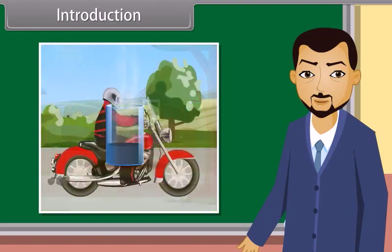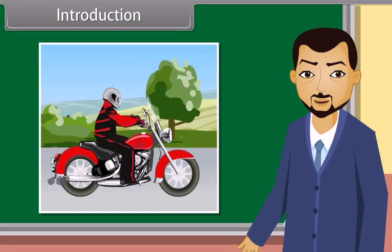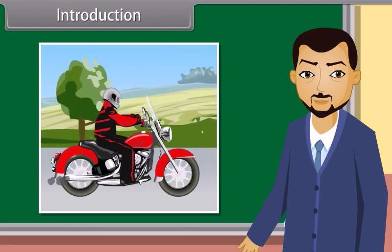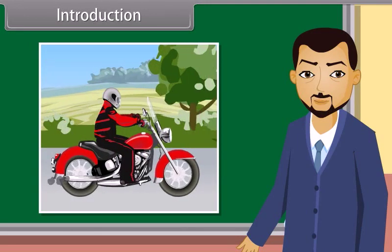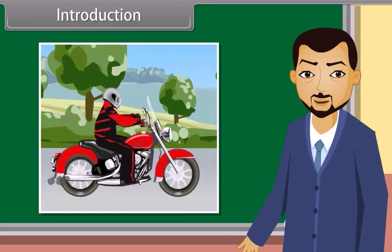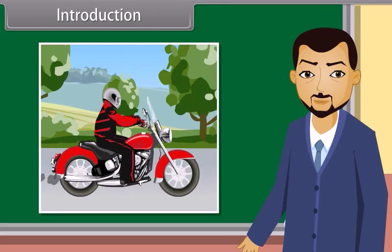However, if we use the same petrol in our bike, the petrol is converted into an energy source that is usable. Children, in this lesson, we will learn about the conventional sources of energy and the non-conventional sources of energy and their impact on the environment.